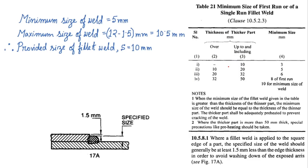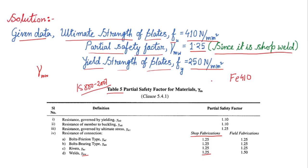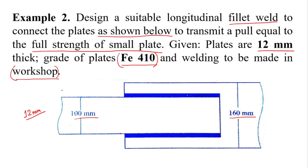Next, minimum size of weld. Before I design the fillet weld, I have to fix the size of the weld. If you see table number 21 of IS 800, from the table, thickness of the thicker plate is 12 mm.